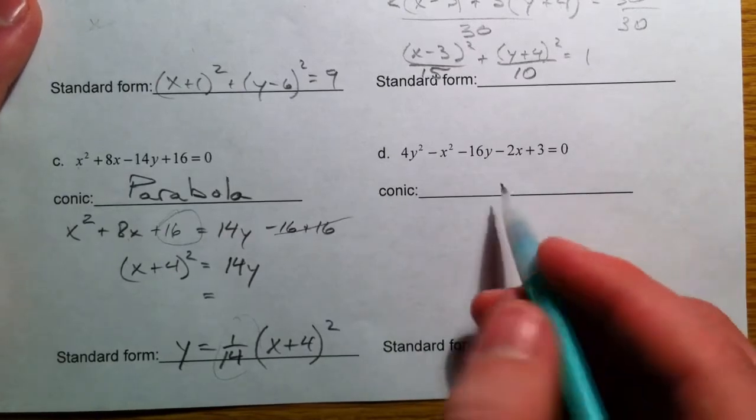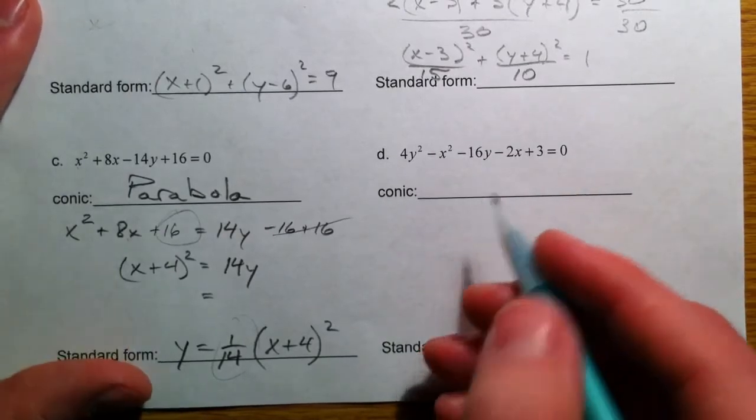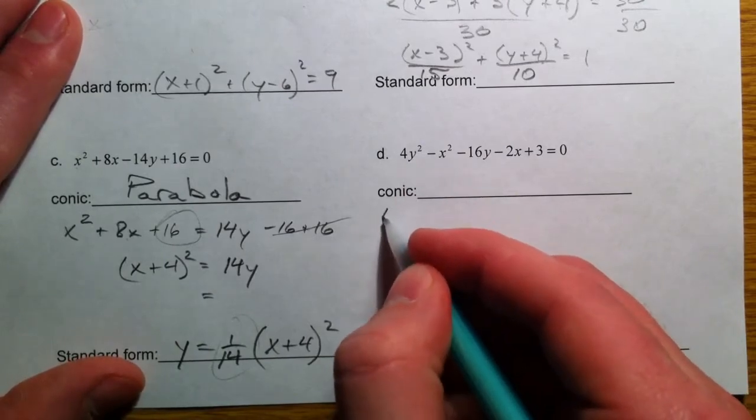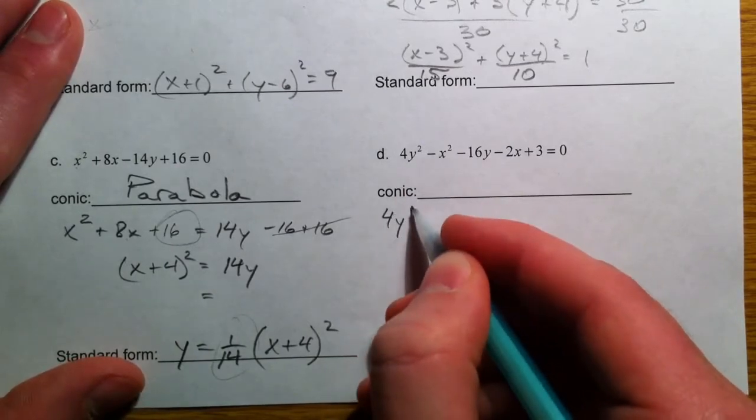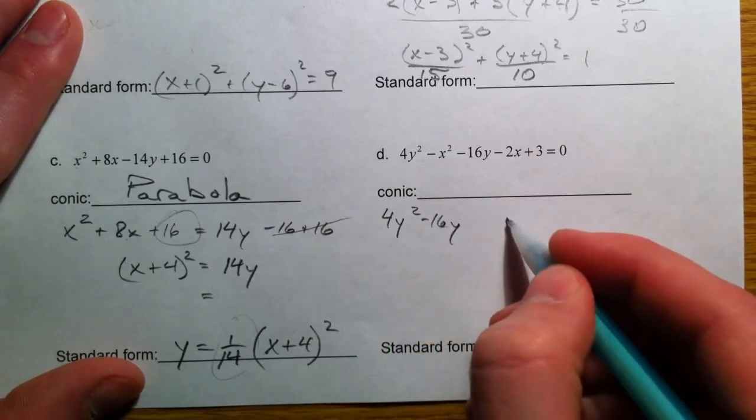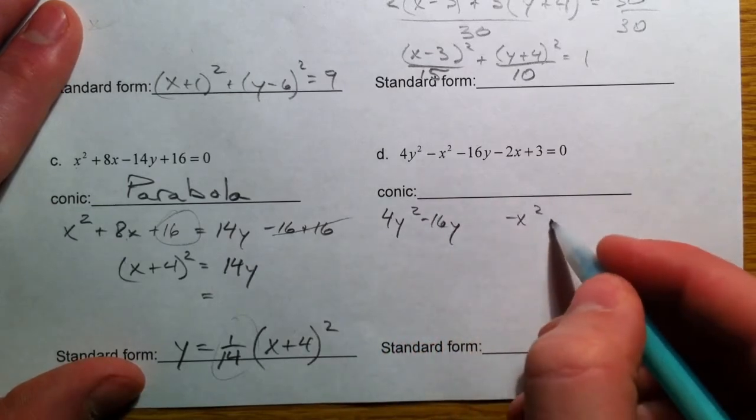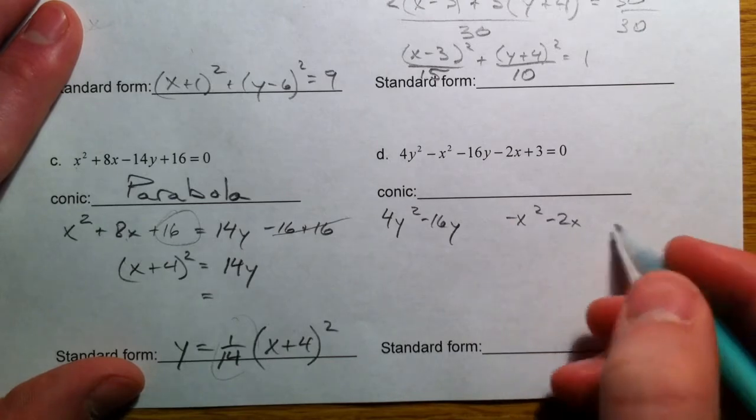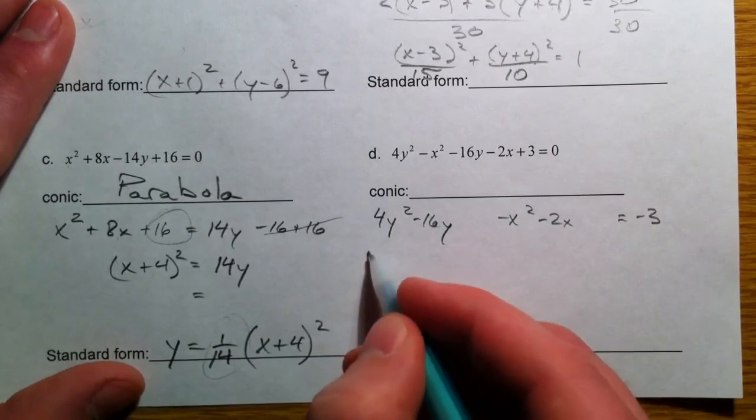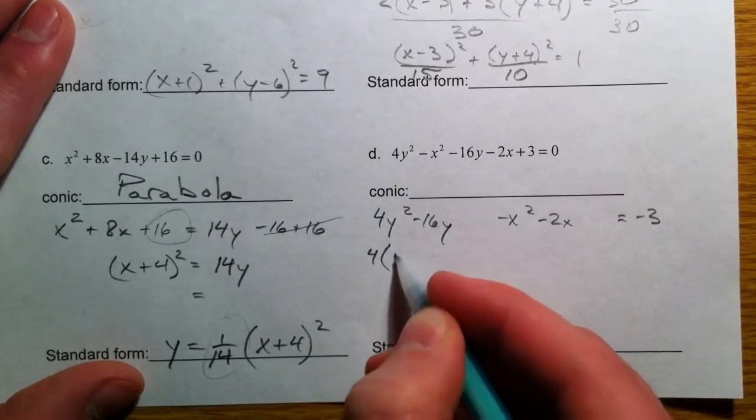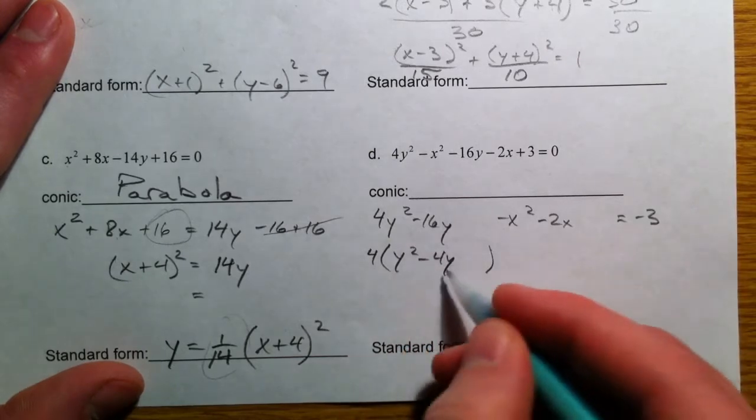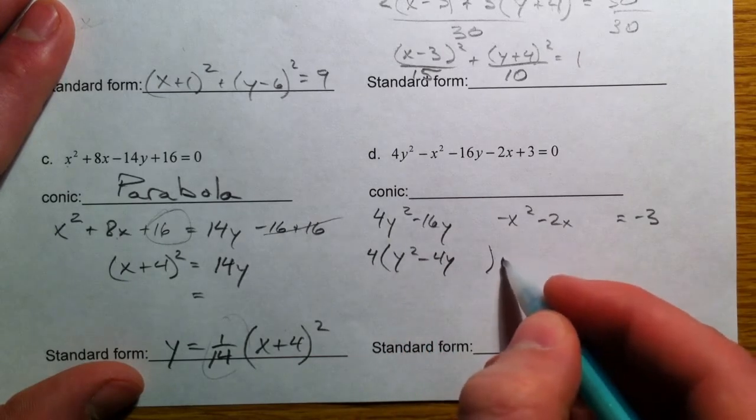Now for completing the square of a hyperbola. I'm going to bring the y's first this time just because they're the positive ones, minus 4y squared. And just like with the ellipses, we're going to factor out the 4. y squared minus 4y. Leave the number in.